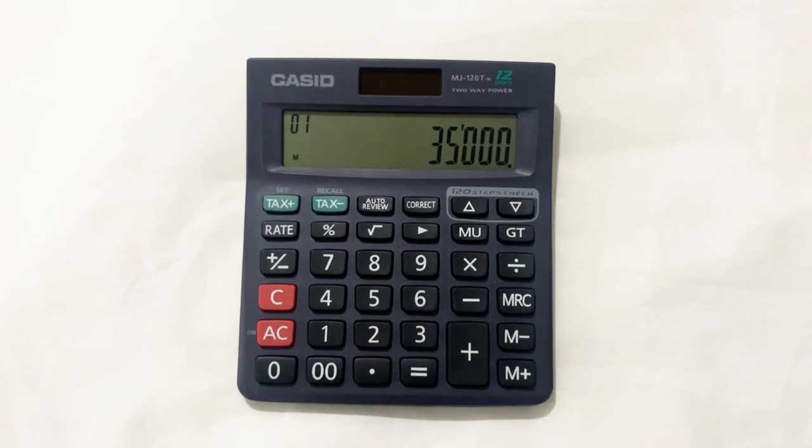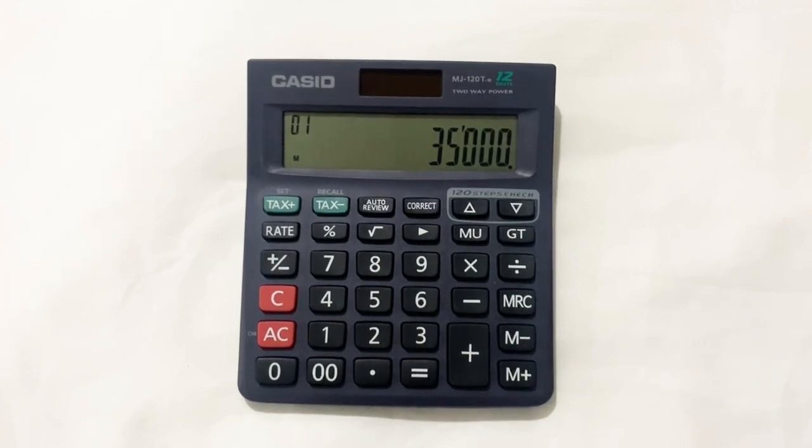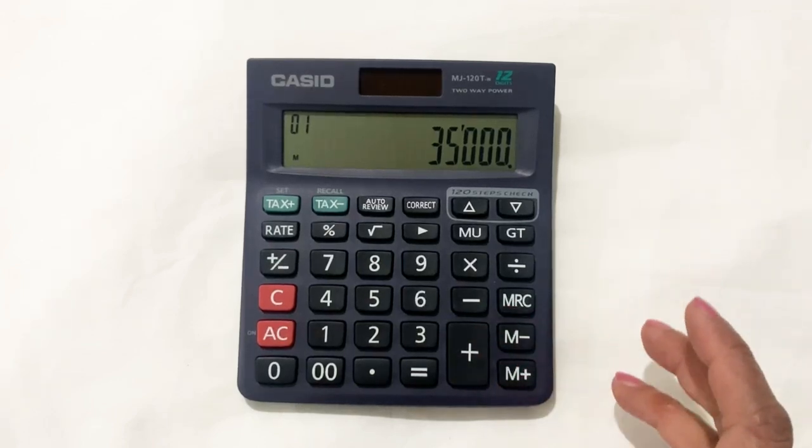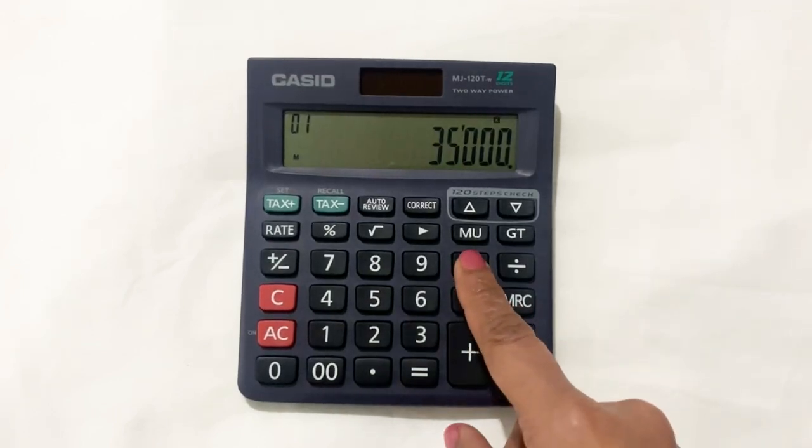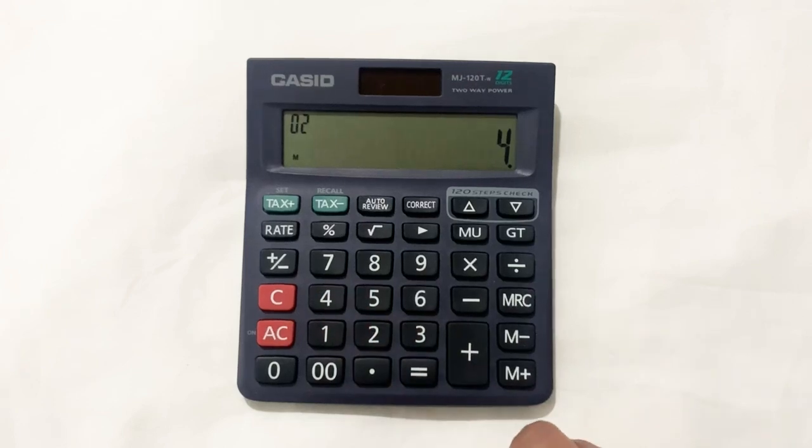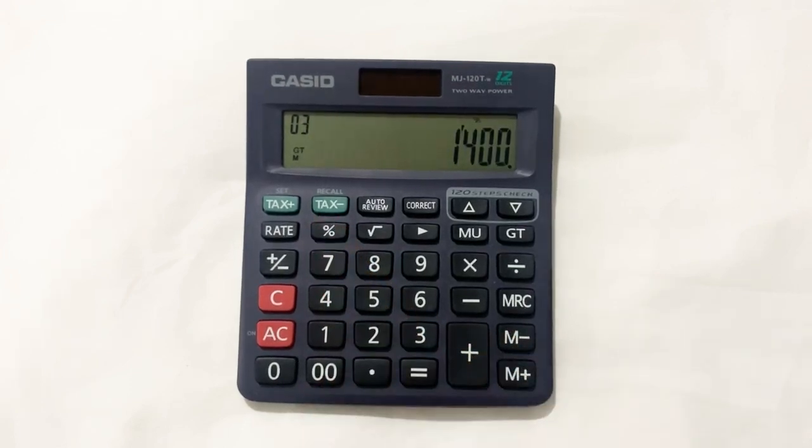You want to find out what the final price will be after 4% off. So you multiply it with 4, then press the percentage button. In the next step, you will press the minus button.